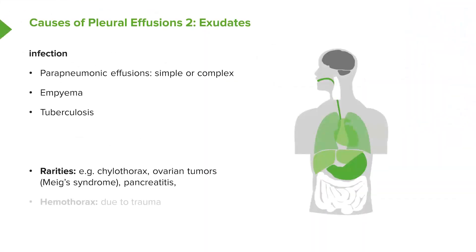There are a whole range of very rare causes of pleural effusions. These include chylothorax, where you have chyle forming in the pleural space; ovarian tumors, called Meigs' syndrome; pancreatitis, which can cause inflammation of the pleura; and trauma itself can cause leaking of blood into the pleura, called a hemothorax. But those are all relatively rare or obvious diagnoses.